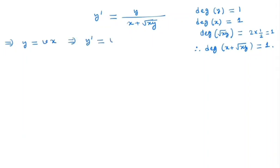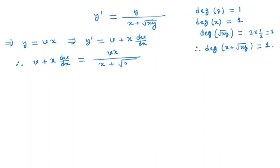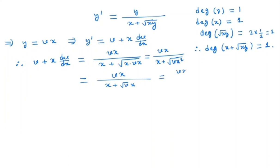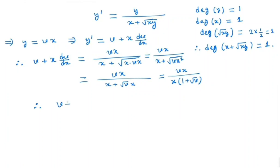By differentiating, we have y prime equals v plus x dv/dx. Substituting, we get v plus x dv/dx equals vx divided by (x plus root under x times vx), which simplifies to vx divided by (x plus root under vx squared). Taking x common in the denominator gives vx divided by x times (1 plus root v), so after cancelling x we have v divided by (1 plus root v).